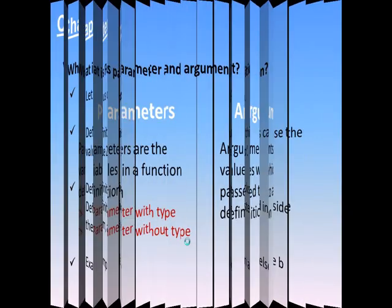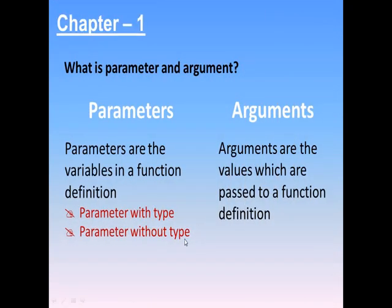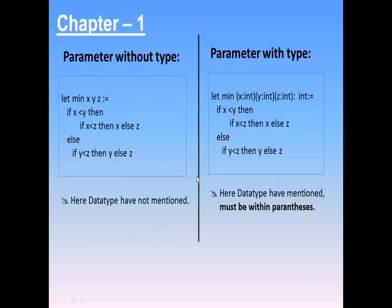Now you have to learn the terms parameter and argument. Parameters are the variables in a function definition. Arguments are the values which are passed to a function definition. Regarding parameters, there are two kinds: parameter with type and parameter without type.